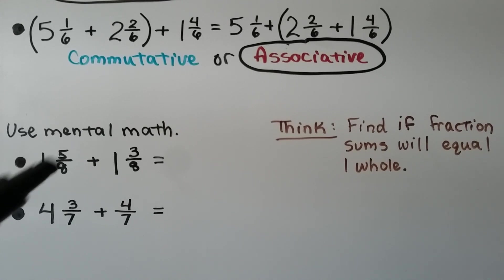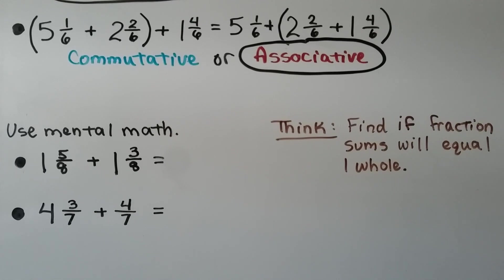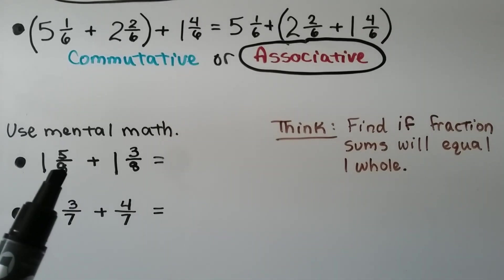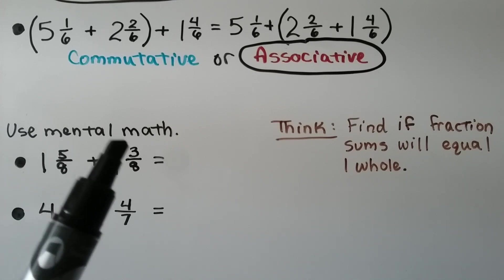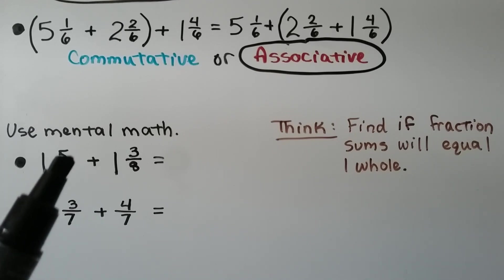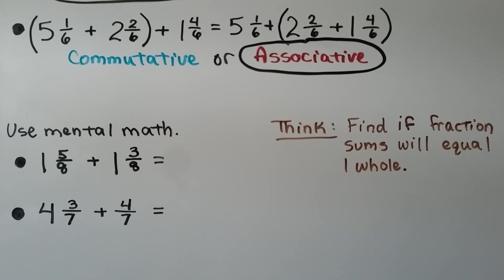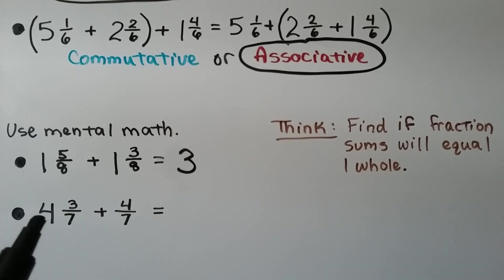We need to use mental math to add these mixed numbers — no paper. We look at 5 eighths and 3 eighths. They have a like denominator, so we add the numerators: 5 plus 3 equals 8 eighths, which is 1 whole. Combined with the other whole numbers, we get 3 whole. For 4 and 3 sevenths plus 4 sevenths: they share a denominator, so 3 plus 4 is 7 sevenths, giving us 4 and 7 sevenths, which is 4 plus 1 more — that's 5.